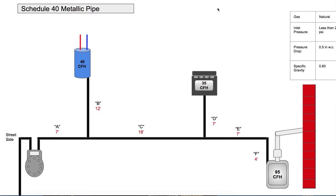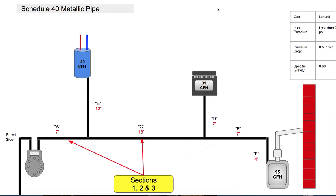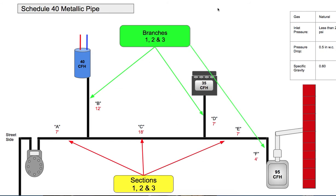Here we have an example: a gas main that has a 40 CFH water heater (40,000 BTU), a 35 CFH stove (35,000 BTU stove), and a 95 CFH or 95,000 BTU furnace. In this example we have a three-section main, as well as three branches — one for each of the gas appliances.